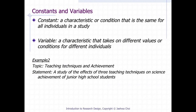A constant can be defined as a characteristic or condition that is the same for all individuals in a study. A variable can be defined as a characteristic that takes on different values or conditions for different individuals. In Example 2, please identify constants and variables: Is teaching techniques a constant or a variable? Is achievement a constant or a variable? Is science as a subject a constant or a variable? Can you find any other constants or variables in this example?